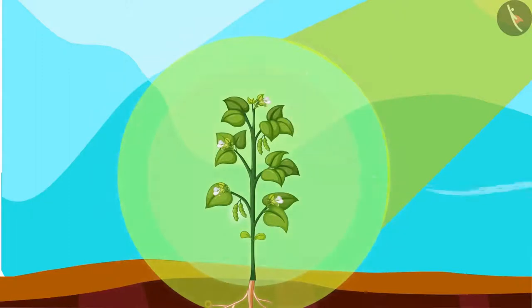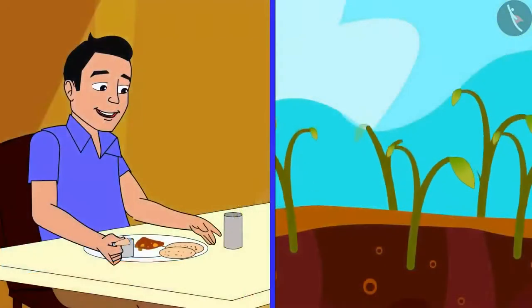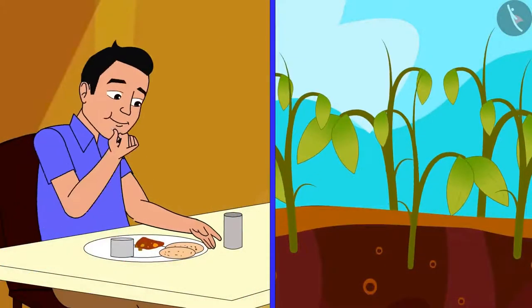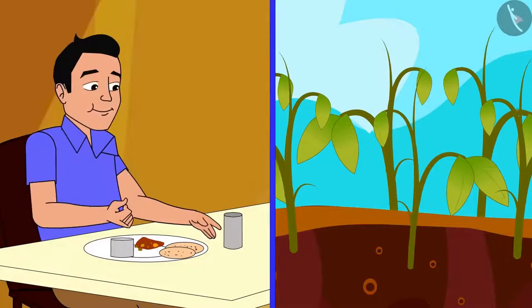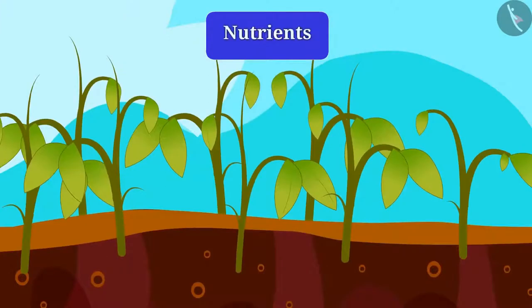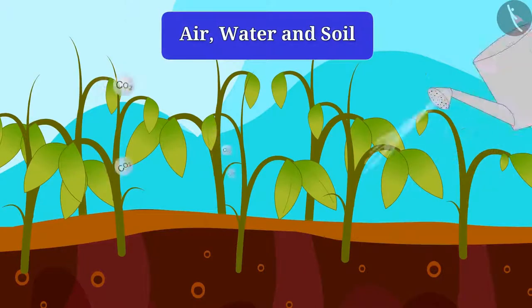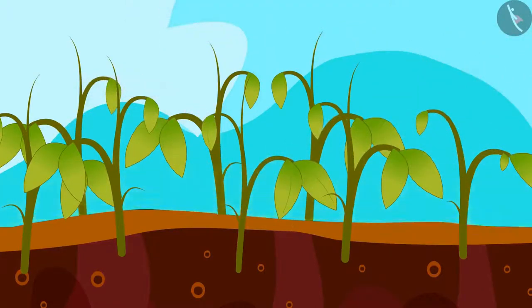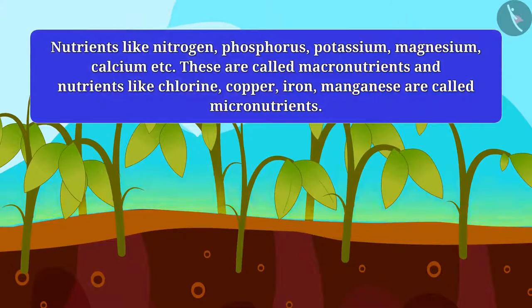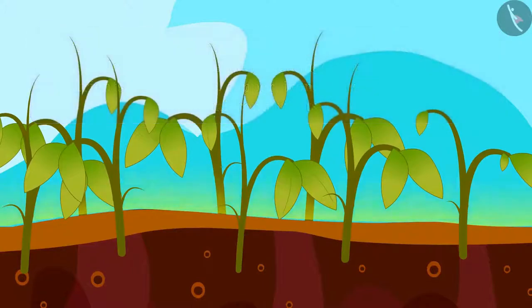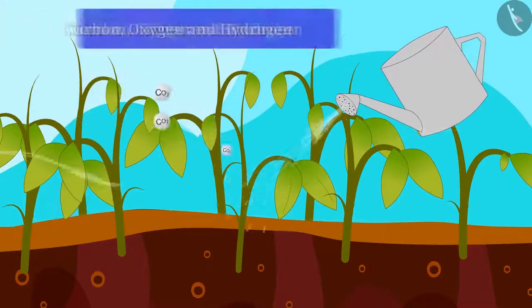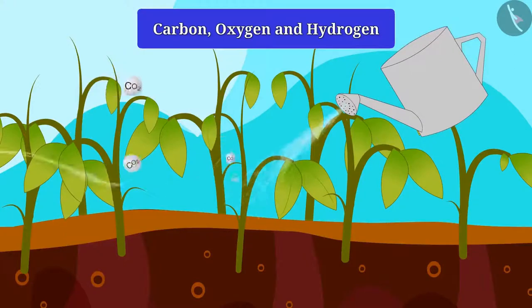So friends, you have learned how to improve the variety of crop and now we will know how to improve the crop production. We all know that we need food for our growth. Do plants also require nutrients for their growth? Yes, plants need nutrients for their growth. And they can get nutrients from air, water and soil. Most of the trees get nutrients from the soil like nitrogen, phosphorus, potassium, magnesium, calcium, etc. Trees get carbon, oxygen and hydrogen from air and water.